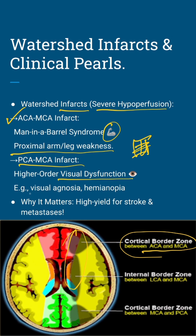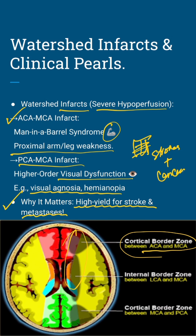A PCA-MCA infarct brings higher-order visual dysfunction — think visual agnosia or hemianopia from occipital damage. Why does this matter? These zones are hot spots for strokes and even brain metastasis. Huge for USMLE vignettes. Check the diagram to see those cortical and internal border zones in action.